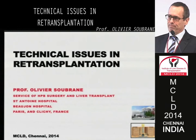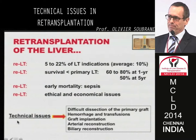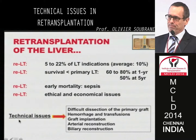I will focus my talk today on technical issues in re-transplantation. I intended to make this talk very practical. Re-transplantation represents an average of 10% of liver transplants, and its results are not as good as primary transplant. You can see 60% to 80% survival at one year and around 50% at five years. This result is mainly due to increased early mortality, mainly due to sepsis. Re-transplantation is also associated with ethical and economical issues.